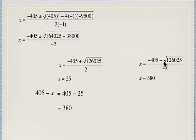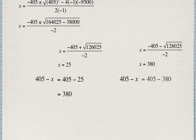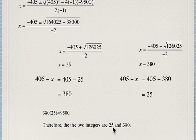The other possibility, when we simplify all this, we get 380. And again, 405 minus x would be 405 minus 380, which is 25. So either way, we end up with our two integers. The two integers are 25 and 380. And we can double check that because 380 times 25 is 9,500.